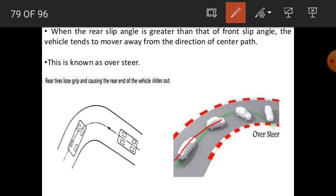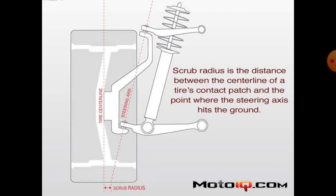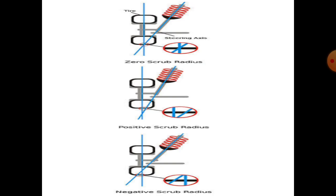The scrub radius is the distance between the centre line of a tire's contact patch and the point where the steering axis hits the ground. There are three types: zero scrub radius, positive scrub radius, and negative scrub radius.